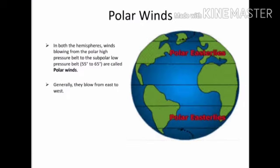What are Polar Winds? In both hemispheres, winds blowing from the polar high pressure belt to the sub-polar low pressure belt — that is, between 55 and 65 degrees — are called Polar Winds. Generally, they blow from east to west.